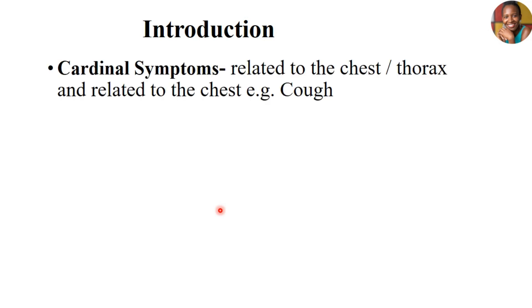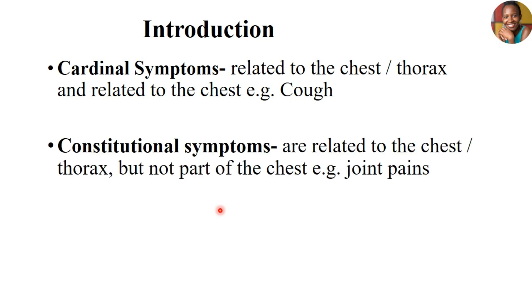Let's introduce what those big words meant — the constitutional and the cardinal symptoms. Starting with the cardinal symptoms: cardinal symptoms means symptoms that are related to the chest and thorax, or rather symptoms that are directly reflecting the chest or the thoracic region. For example, coughing — when someone coughs, the first thing you think about is either the lungs or organs around the thorax or the respiratory system.